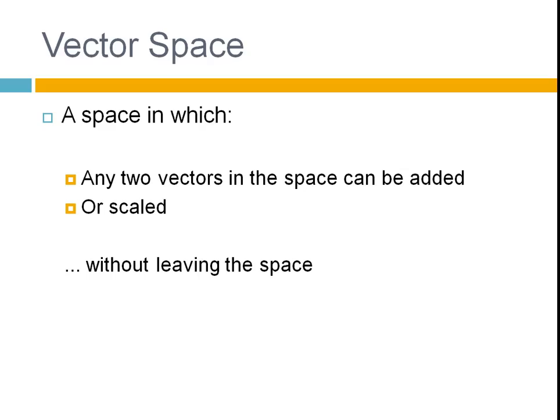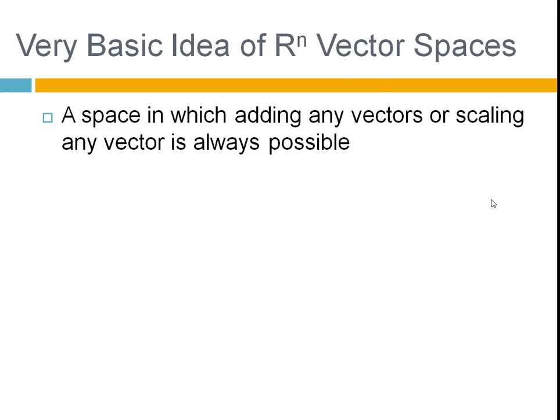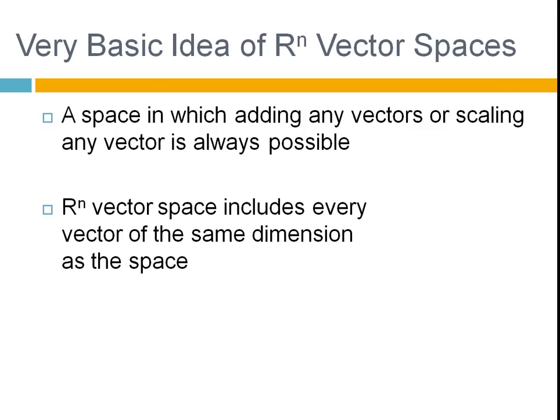That's what a vector space is. You often hear people talking about R^n. This is very important. R^n is a space in which adding any two vectors, absolutely any, or scaling by any vector with the same dimension is always possible. So it contains basically all the vectors. R^n vector space includes every vector of the same dimension as the space.